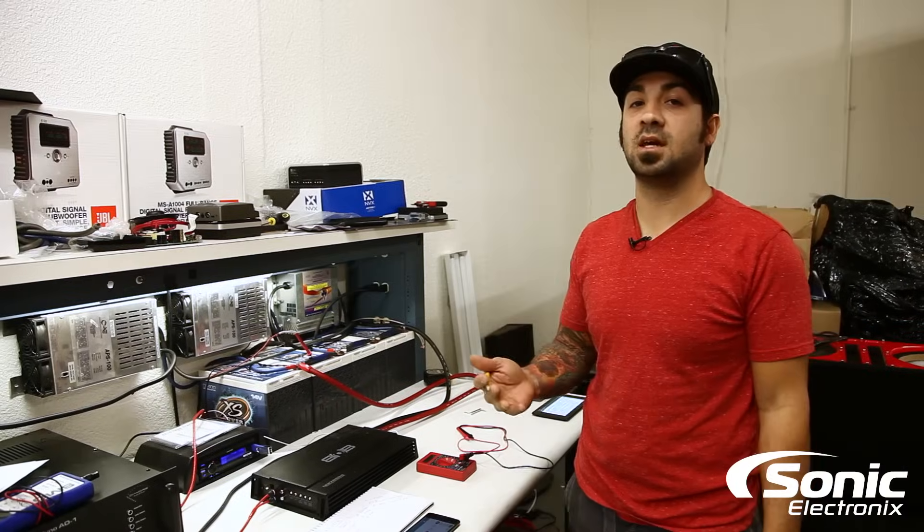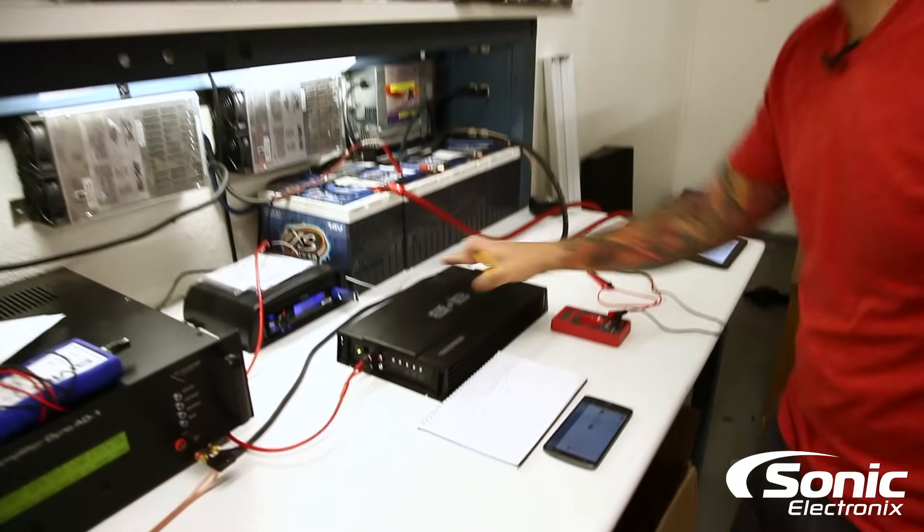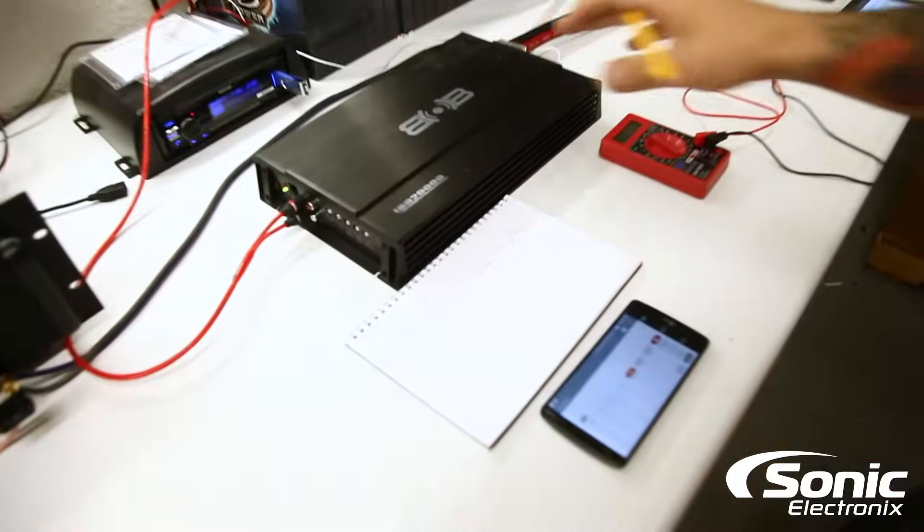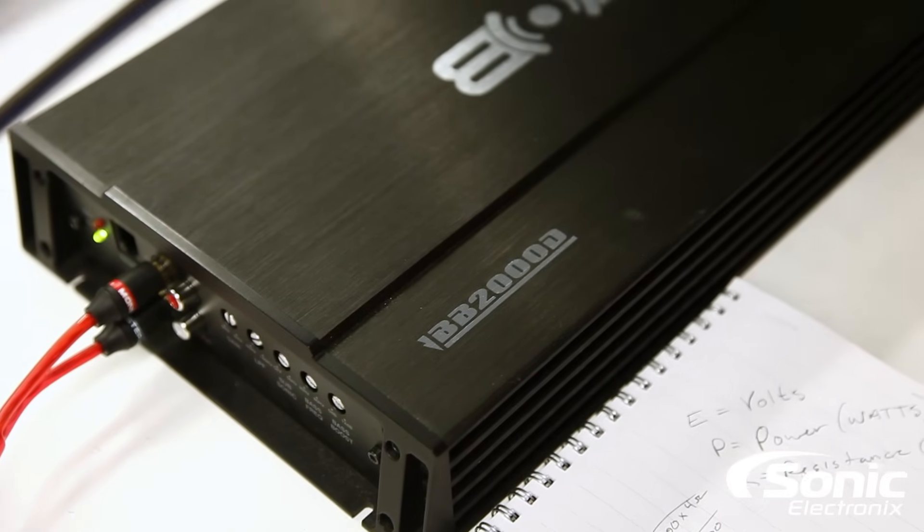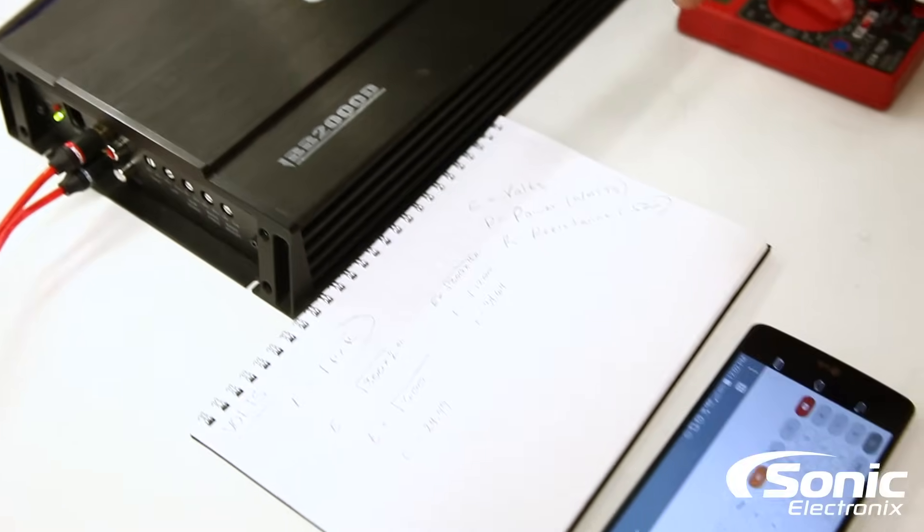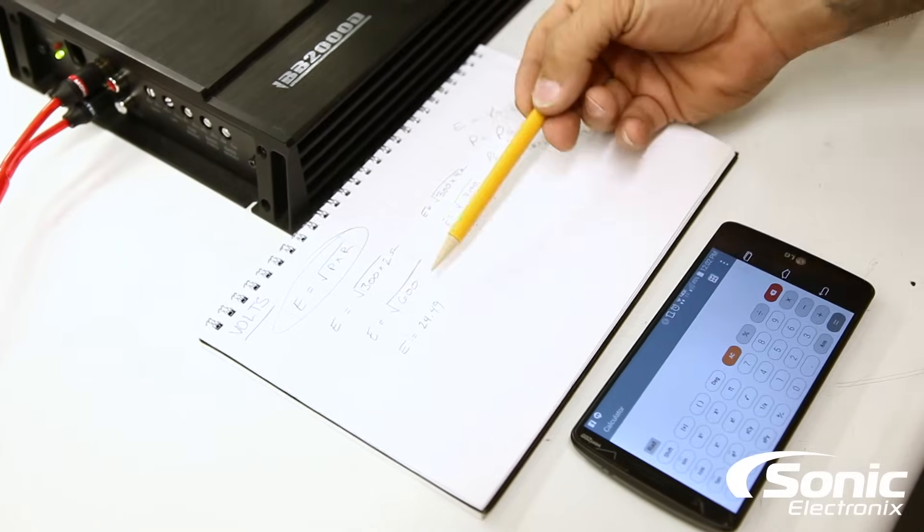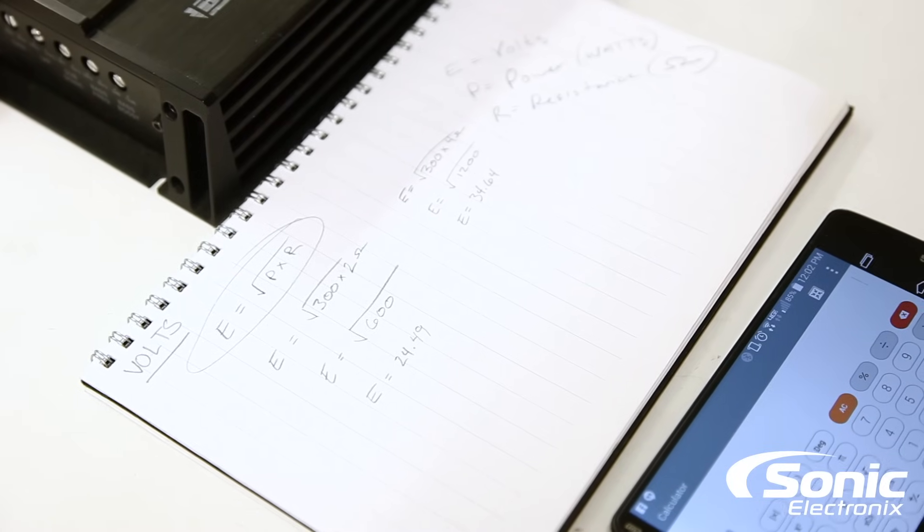Just in case that didn't convince you, we're gonna do one more for you. So we're gonna aim for 600 watts this time. We know we have about a 2,000 watt amplifier here, and I just want to give you a disclaimer: we are not dynoing and showing you the full potential of this amplifier. We are simply adjusting the gain to achieve the amount of power that we're calculating that we want to power our woofer or our speakers.